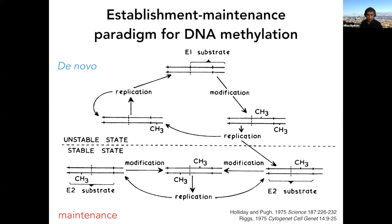The proposal was that there would be a de novo DNA methyltransferase that could modify unmethylated DNA. Once it left, DNA methylation would be slowly diluted by DNA replication. But if you had the additional presence of a so-called maintenance enzyme that could take hemimethylated DNA produced by replication and remethylate the new strand — so that both strands were methylated in a palindromic sequence context such as CpG — then the maintenance enzyme could remember the prior action of the de novo enzyme.